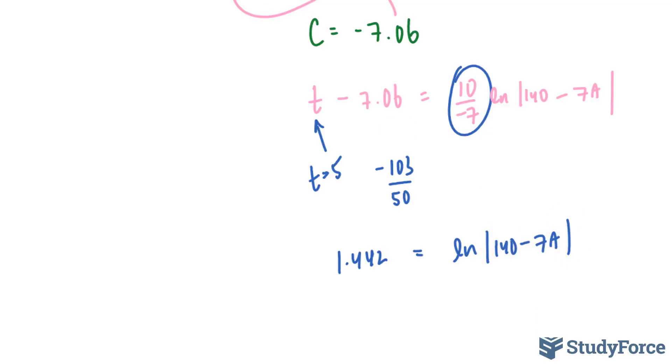So the left side has become 1.442 is equal to ln absolute of 140 minus 7A. I'm solving for A, so I'm going to raise both sides to the base e. That gets rid of that. Then I'll bring the 140 over to the other side.